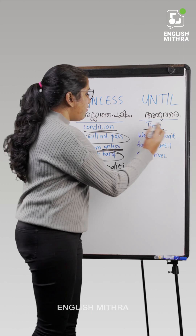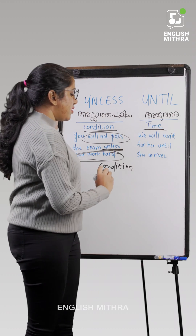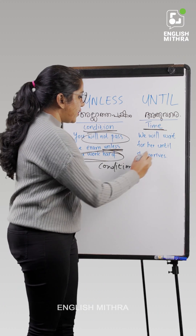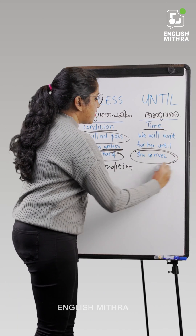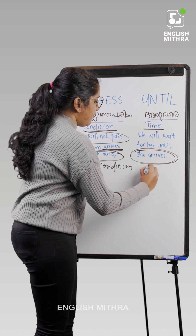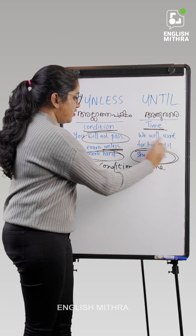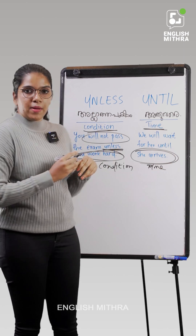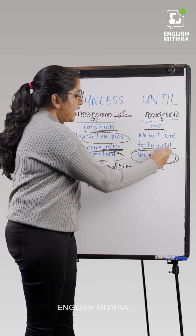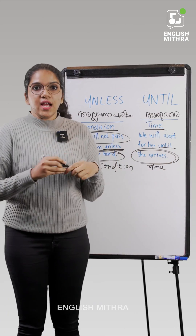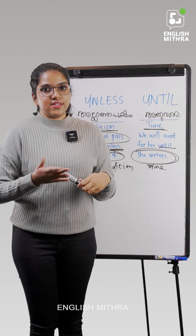'We will wait for her until she arrives.' We wait until she arrives. So 'until' represents time, and 'unless' represents a condition. That is the key difference between the two.